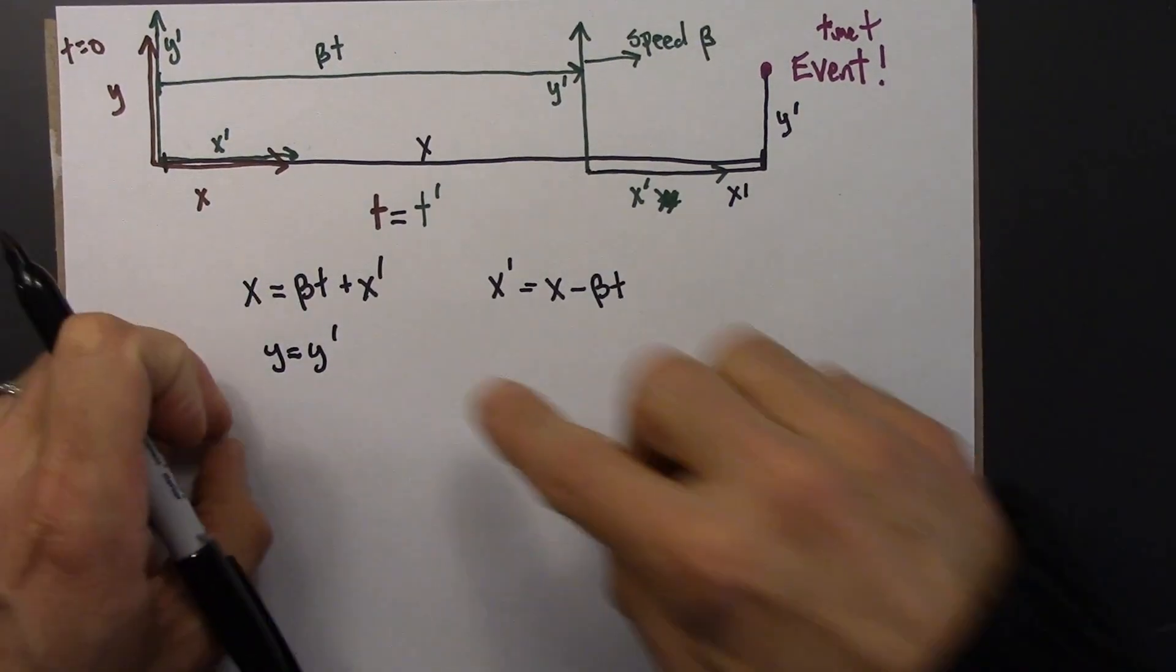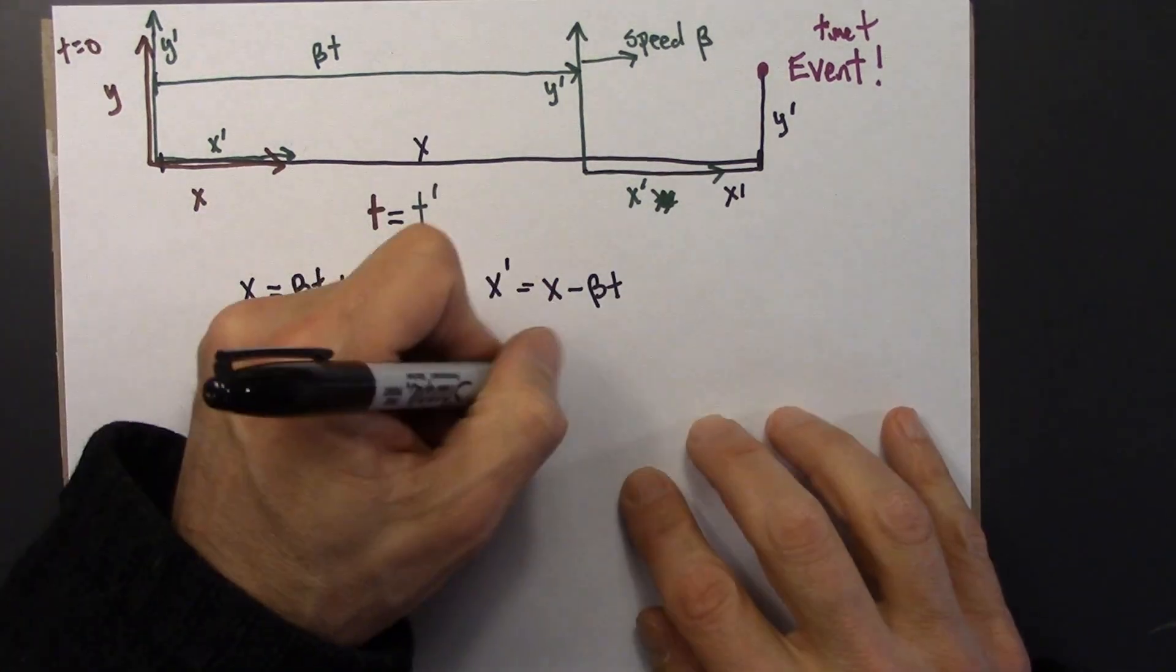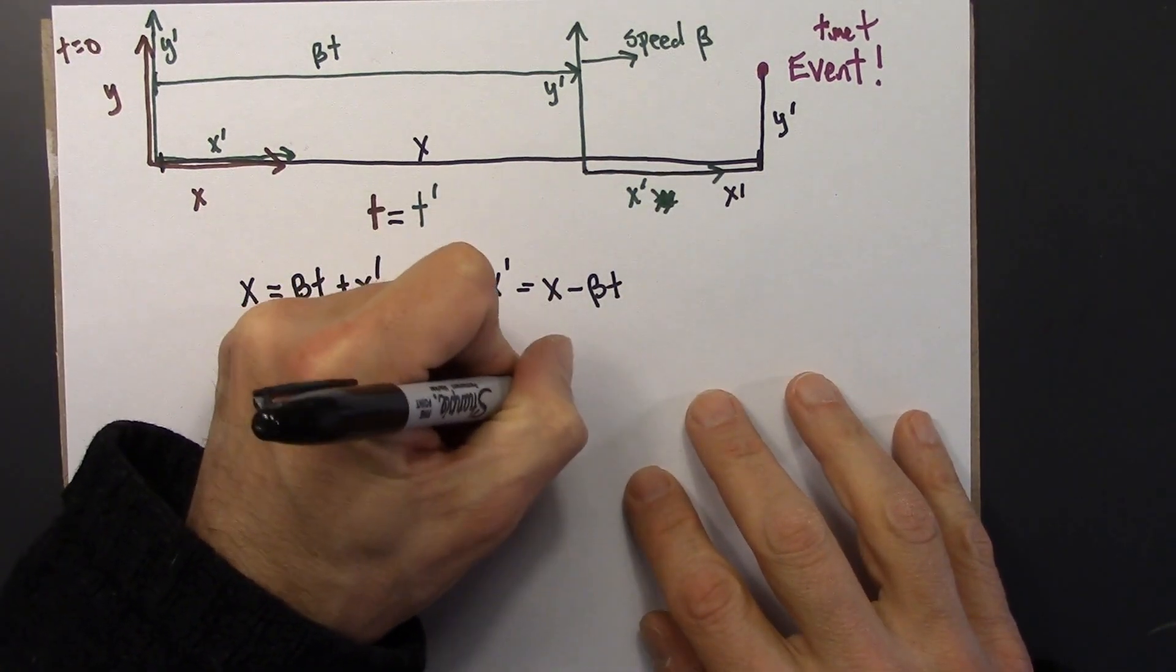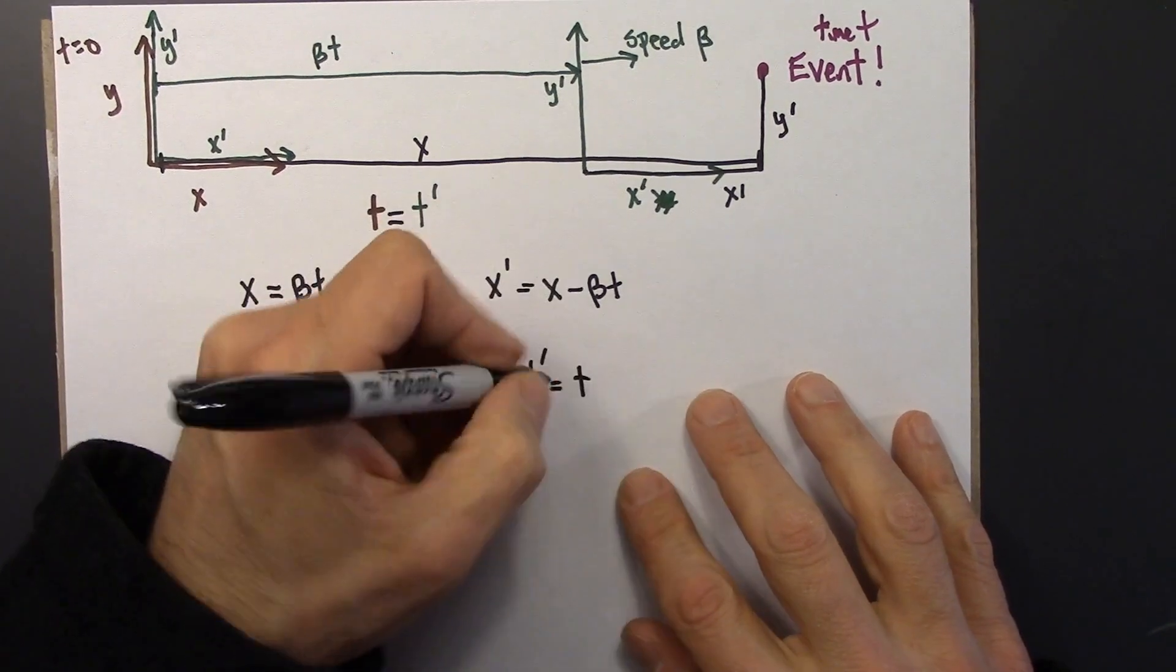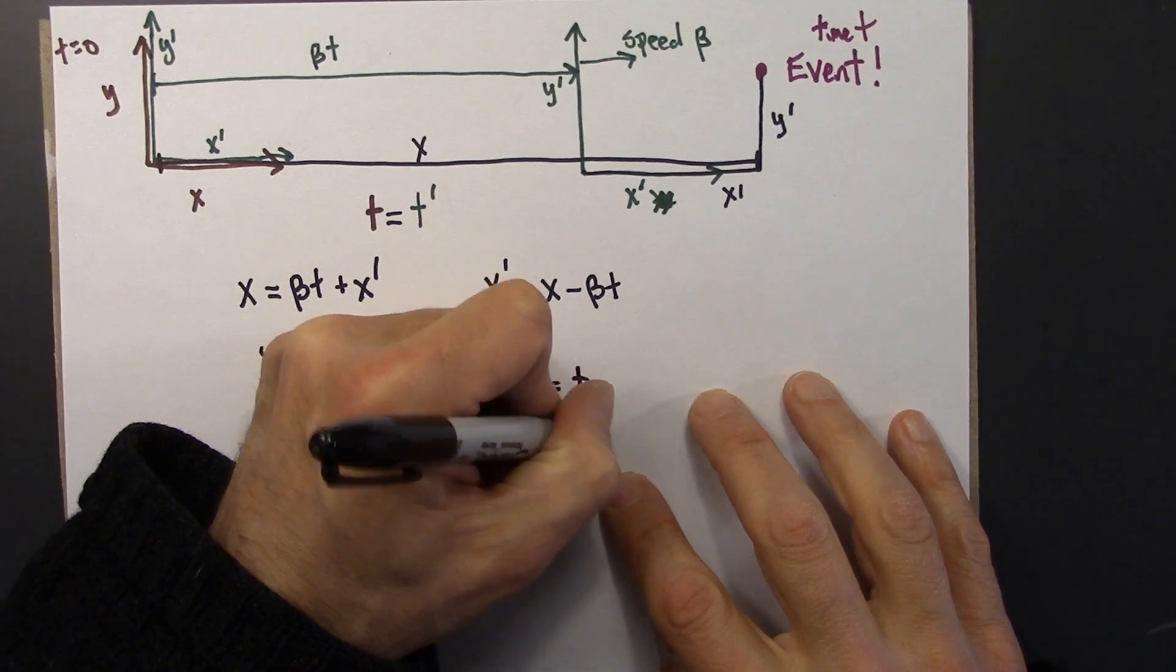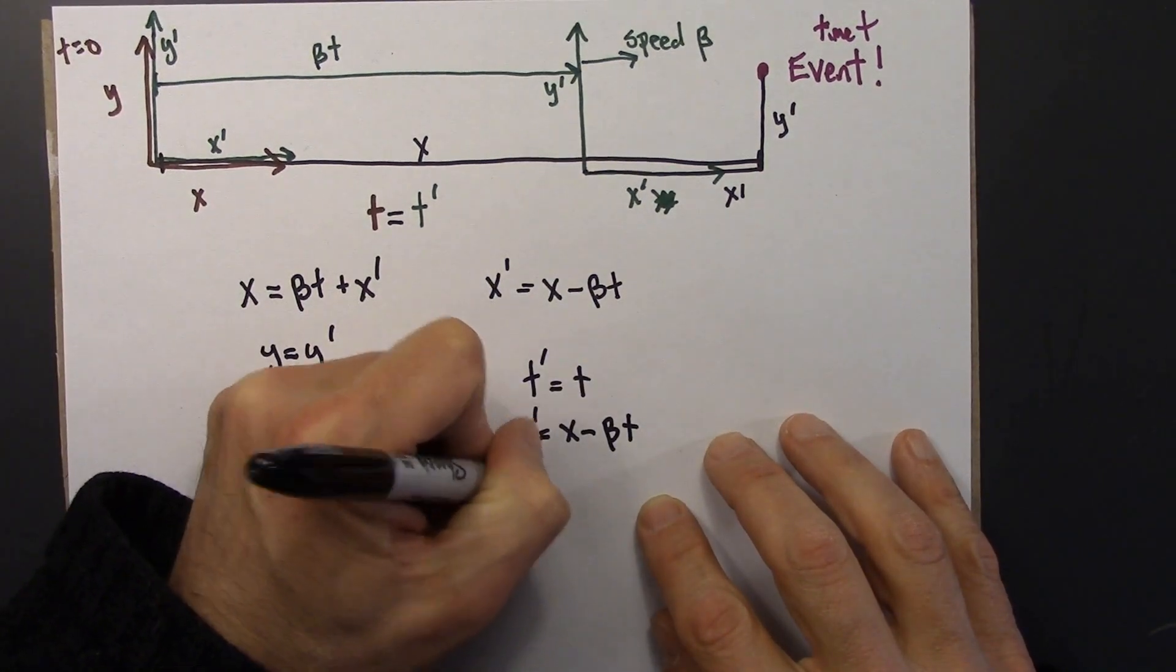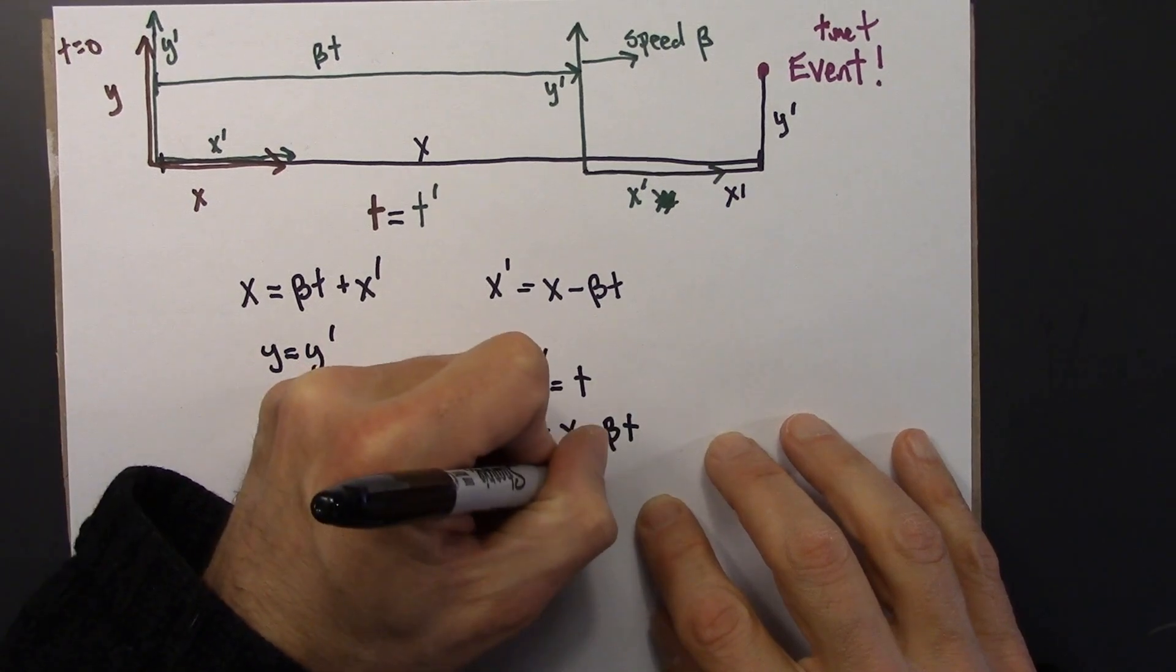Alright, so let me collect these results and just rewrite them briefly. So I'm going to write them in this form. t prime equals t, x prime is x minus beta t, y prime is y.